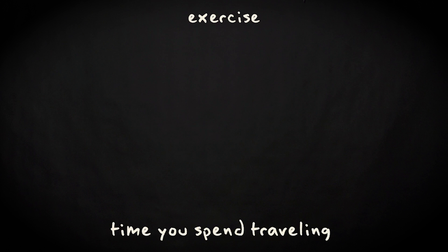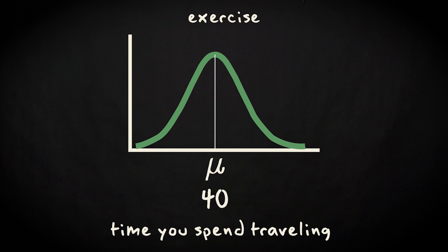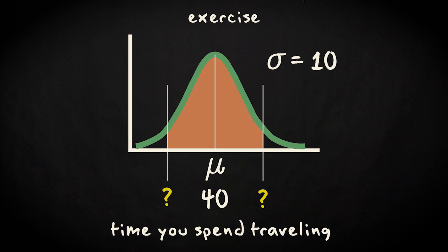Assume that the time you spend traveling on a weekday is given by this normal distribution with a mean of 40 minutes and a standard deviation of 10 minutes. What would then be the range of travel times for 95% of your weekdays?